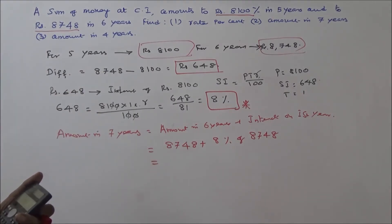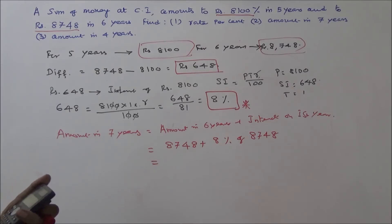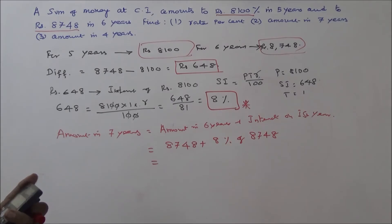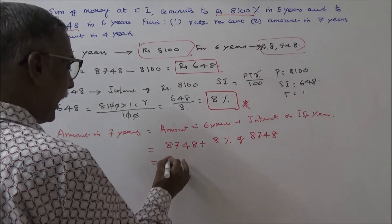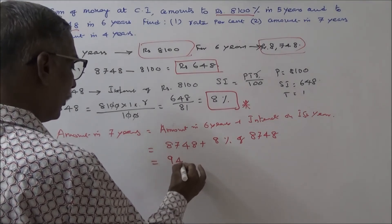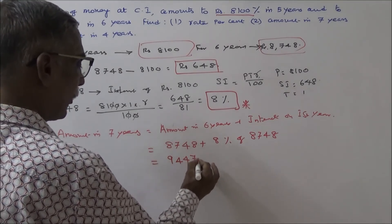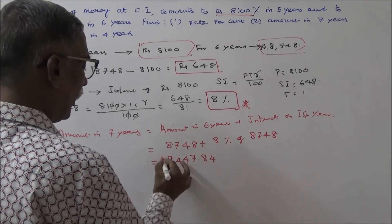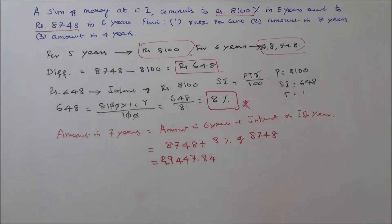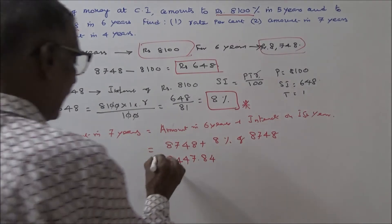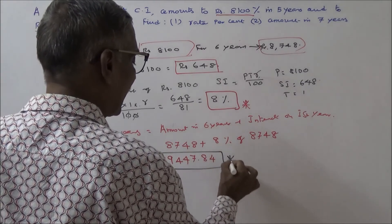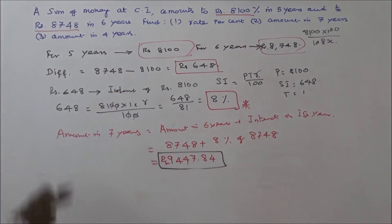So 8748 plus 8748 multiplied by 8 divided by 100. That equals Rs.9447.84. So the amount in 7 years is Rs.9447.84. This is the answer for the second question.